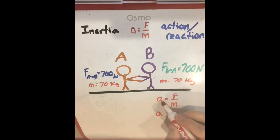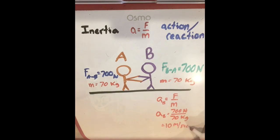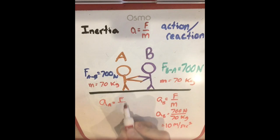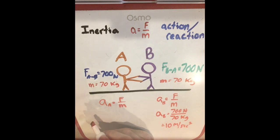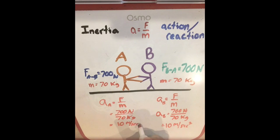We can then figure out the acceleration of each person. The acceleration of person B is 700 Newtons divided by 70 kilograms, which equals 10 meters per second squared. For person A, using the same formula — the same force and the same mass — we also get 700 Newtons divided by 70 kilograms, which is also 10 meters per second squared. So both people will accelerate away from each other at the same rate, 10 meters per second squared. That makes sense because they have the same force and the same mass.